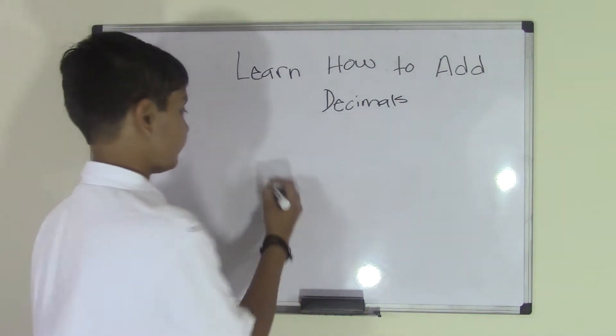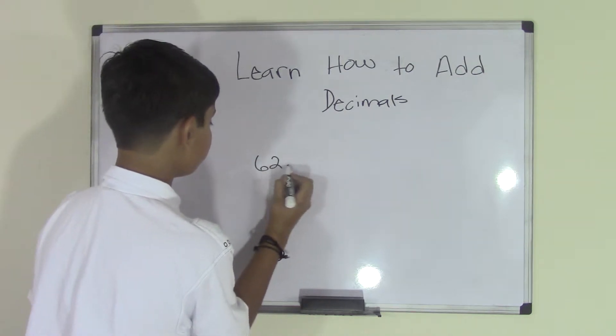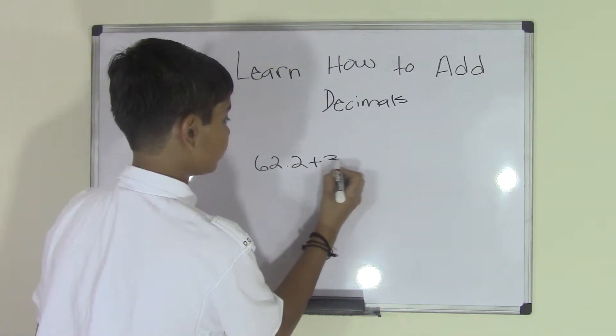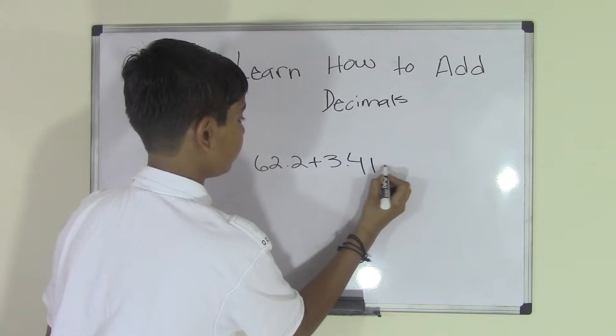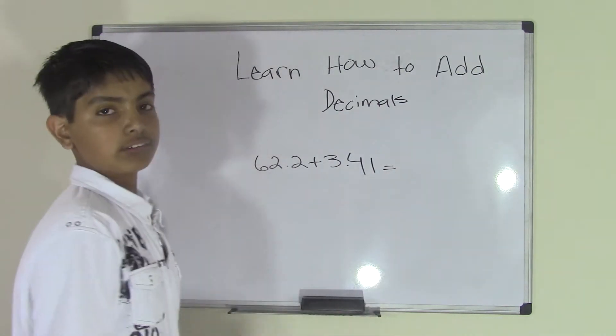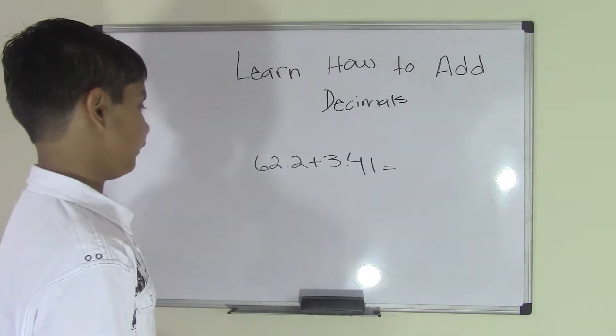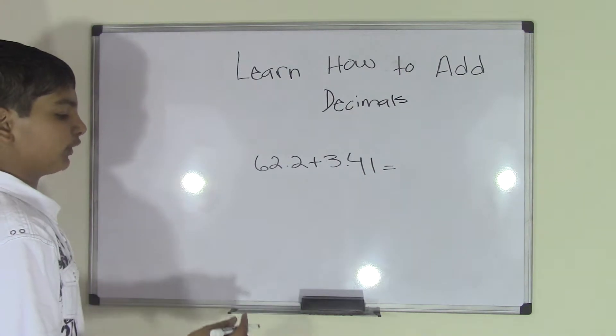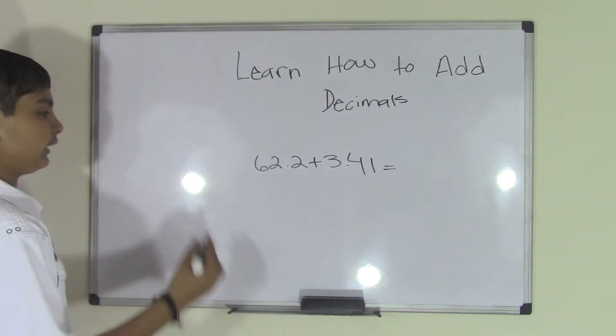When you add decimals, you get problems like 62.2 plus 3.41, and they give it to you in horizontal form usually. So today I will be teaching you how to do it in vertical form since that is the easiest way.